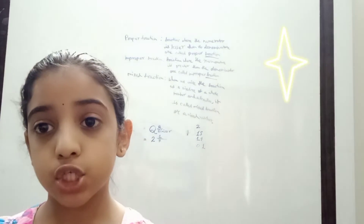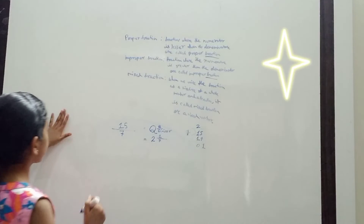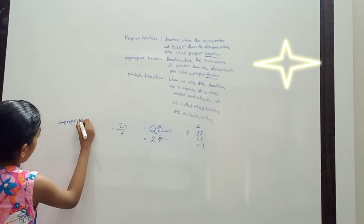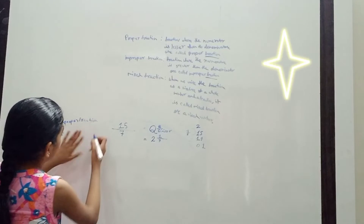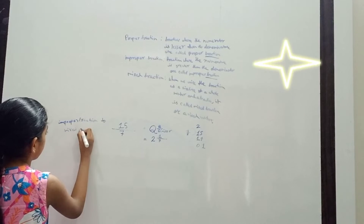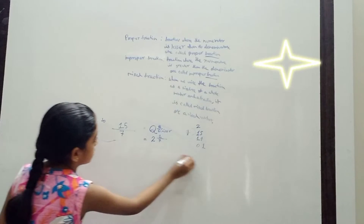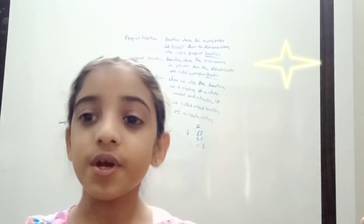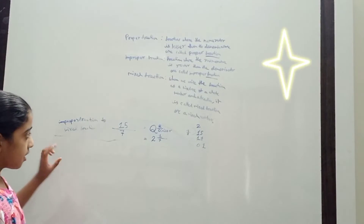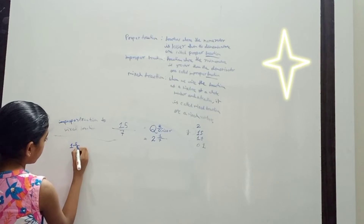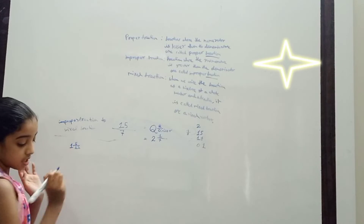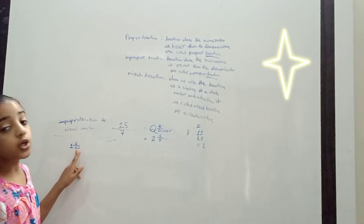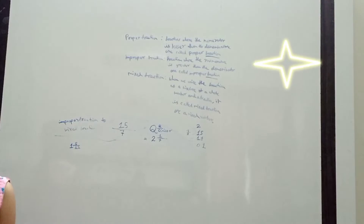Now let's learn how to convert a mixed fraction to an improper fraction. They have given 1 whole and 5 over 12 — meaning there are 12 pieces total and I have 5 pieces eaten from the whole. Now, to understand the formula you need concentration — please concentrate, then it's easy.